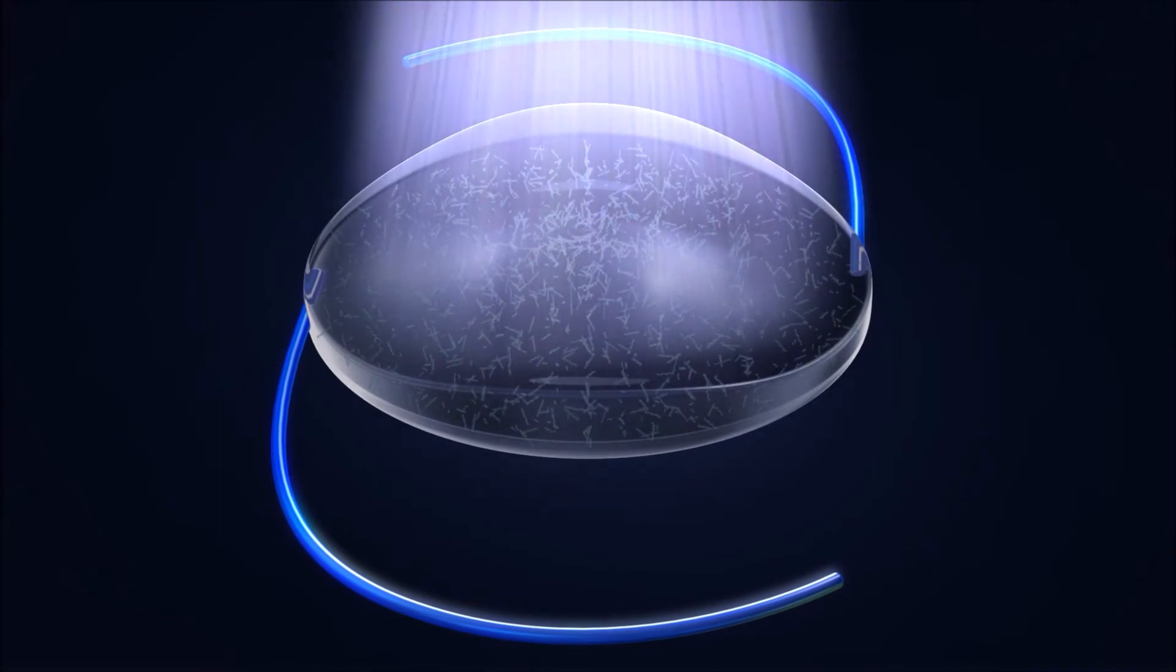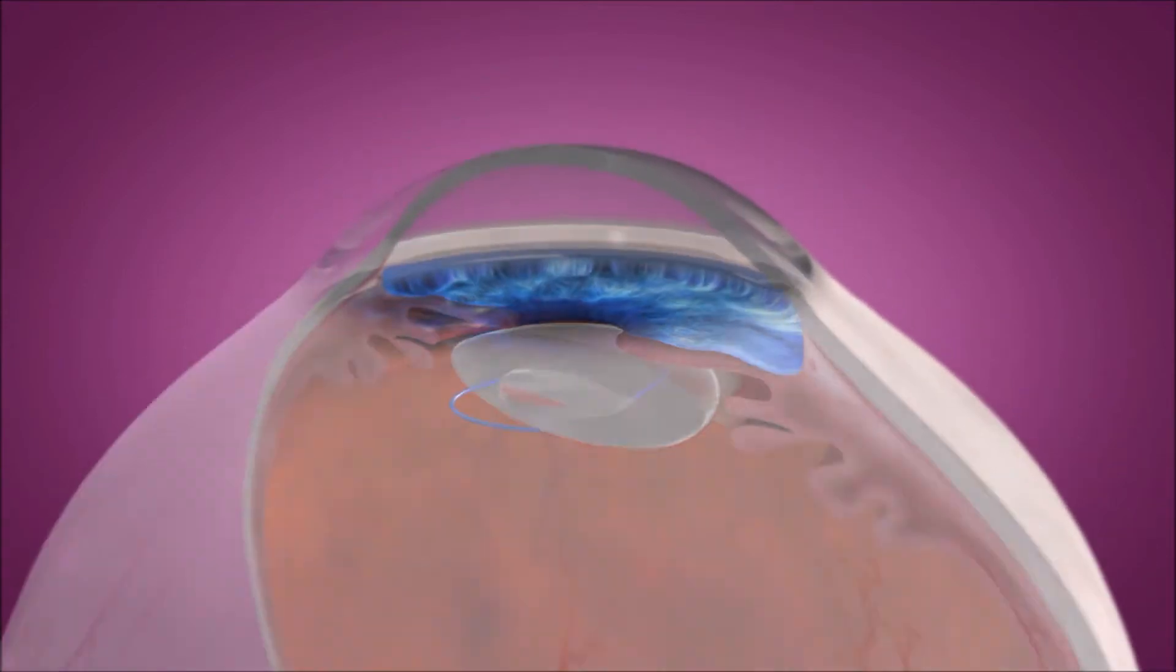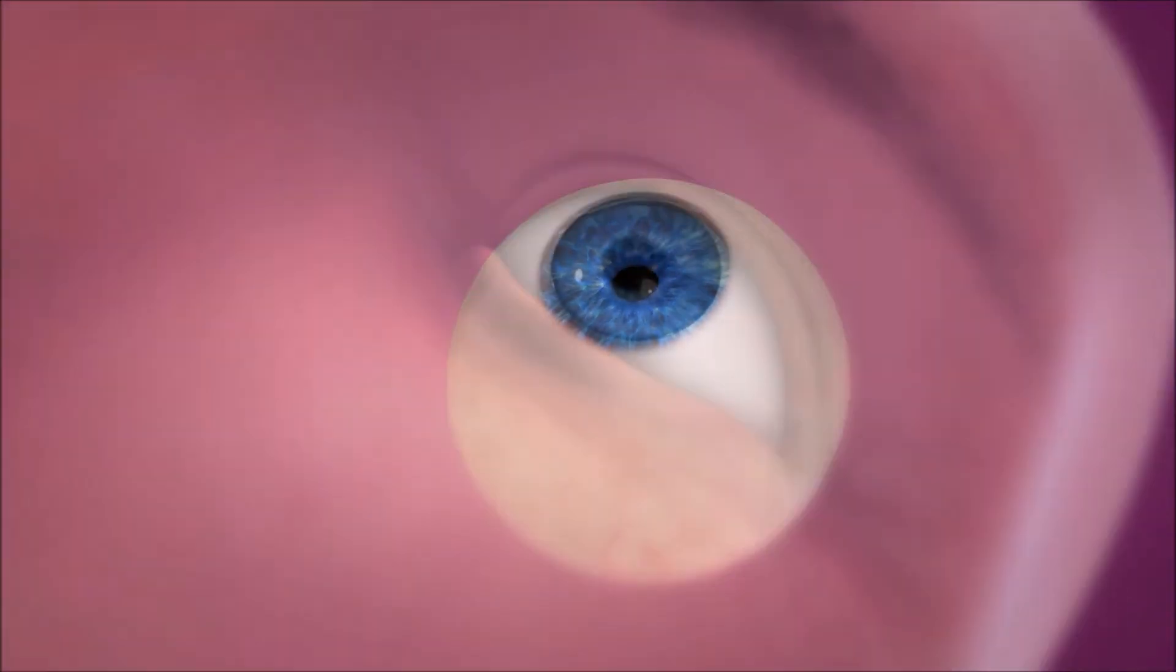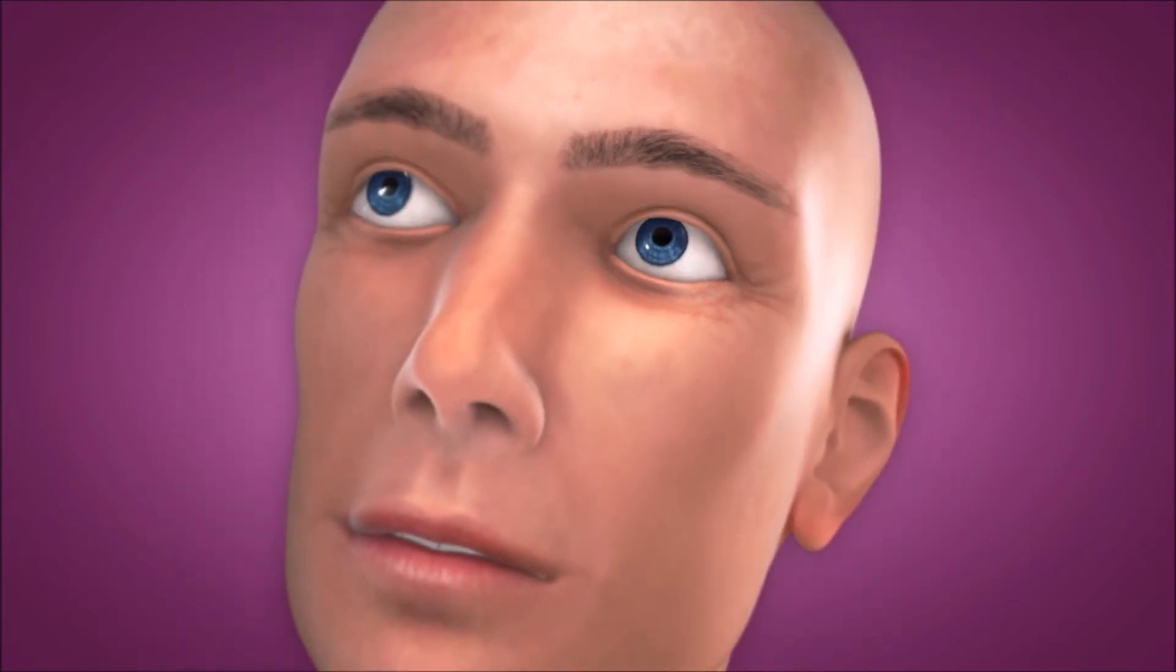RxSight's light adjustable lens enables cataract surgeons to precisely reshape the lens based on the exact amount of visual correction and optimization needed to achieve the desired vision after cataract surgery.